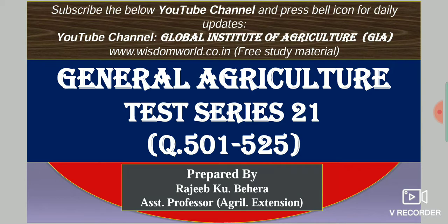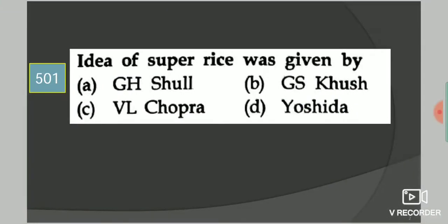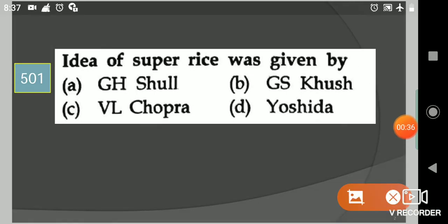So without any delay, let's start our test series. Your first question is: Idea of super rice was given by? Your options are GH Khol, GS Khush, BL Chopra. The answer is option B, GS Khush.